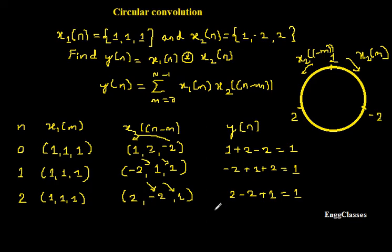So ultimately this is how we get circular convolution. The answer is y(n) is equal to {1, 1, 1}. So this is the best method to solve any numerical under circular convolution, and the easiest method.